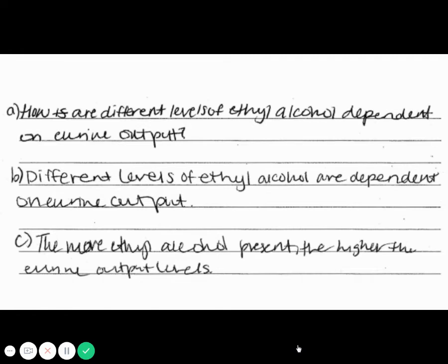Different levels of ethyl alcohol are dependent on urine output. Again, I think we're getting cause and effect reversed. Different levels of ethyl alcohol are dependent on urine output. That's cause and effect are backwards. And then part C: the more ethyl alcohol present, the higher the urine output levels. And that's absolutely correct.